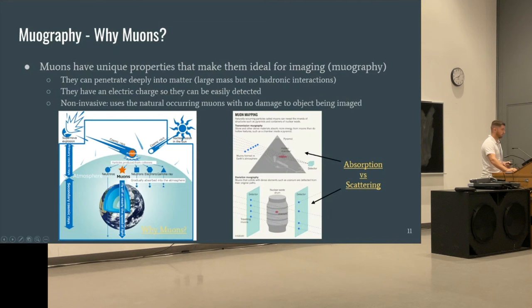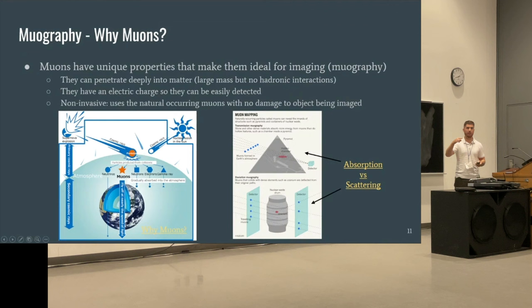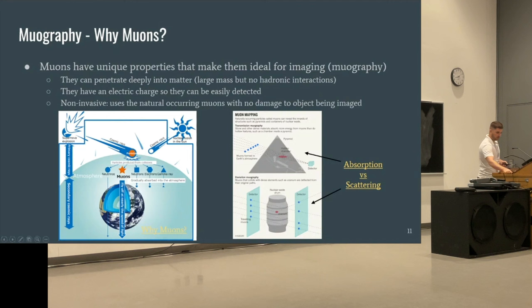Muons have these unique properties where they can both penetrate through matter and leave a detectable trail. Third, they're also non-invasive, which is important because you don't want to ruin the internal structure of objects of interest. It uses naturally occurring muons from the upper atmosphere. The basic principle of the pyramid measurement is that cosmic ray muons from the atmosphere penetrate deeply into the pyramid, a muon detector below measures the absorption, and less absorption than expected implies a hidden chamber or empty space.